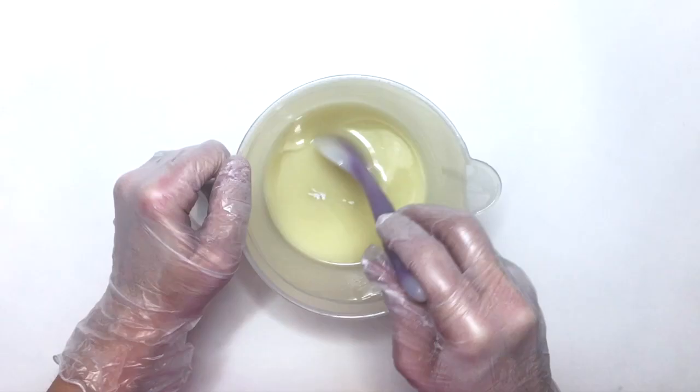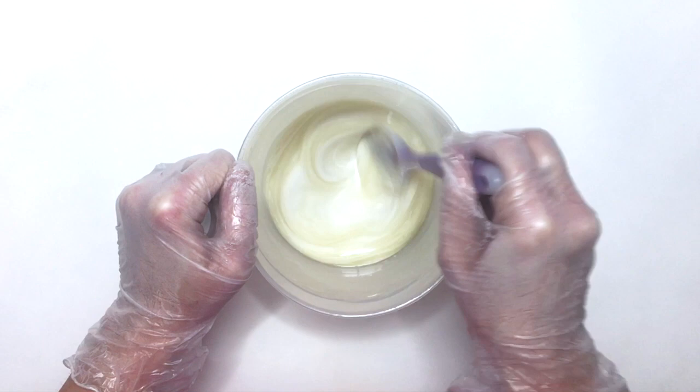I set aside a few ounces so that I can see how the fragrance oil will affect the color of the soap, and I add the whites into the remaining batter.